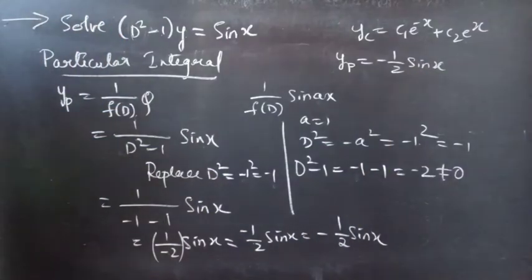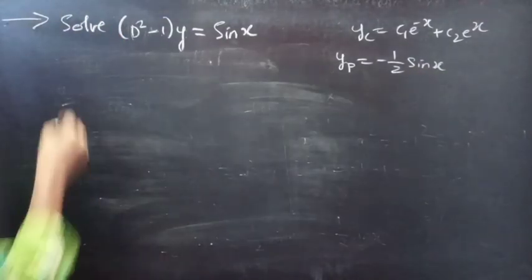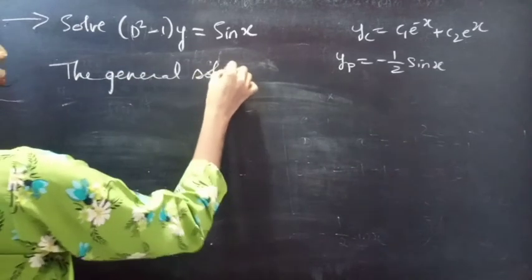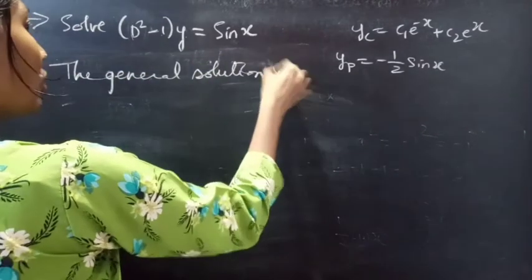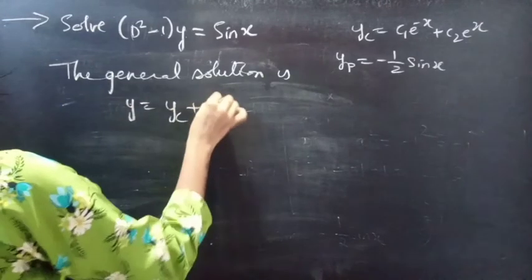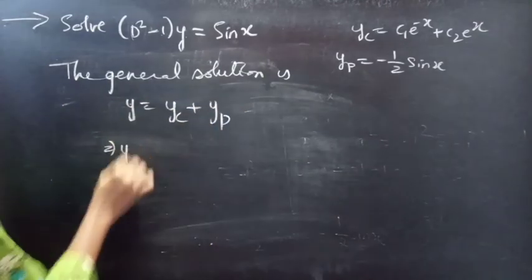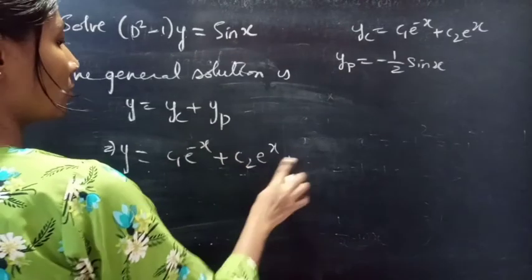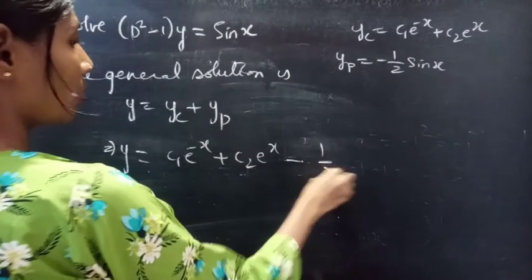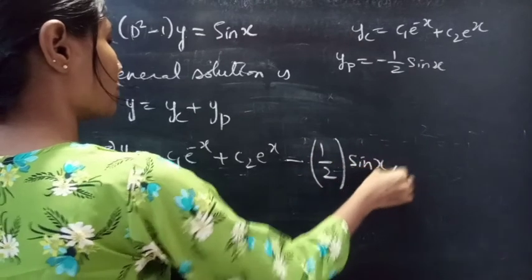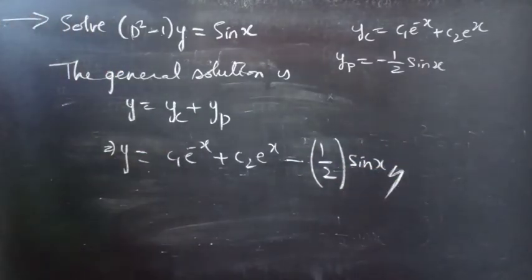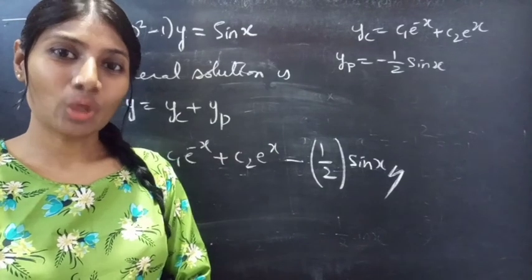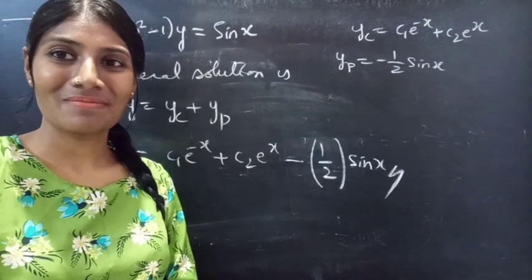Now we can write the general solution. The general solution is y = yc + yp = c₁·e^(-x) + c₂·e^x - 1/2 · sin x. This completes the problem. We have seen a problem from higher order linear differential equations in this video. Hope you understand. See you in the next video — bye bye!